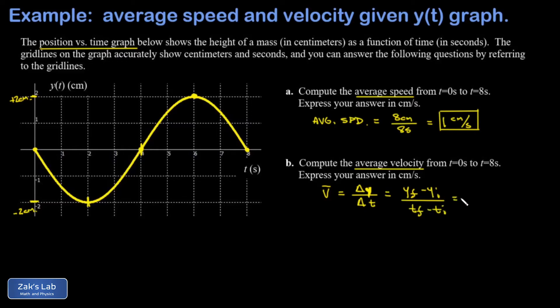My final and initial y values are both zero—this object ends up exactly where it started. My delta t is eight seconds, so I end up with zero over eight, which is zero. So when an object ends up back where it started on some time interval, then its average velocity for that time interval is zero. And that's it.